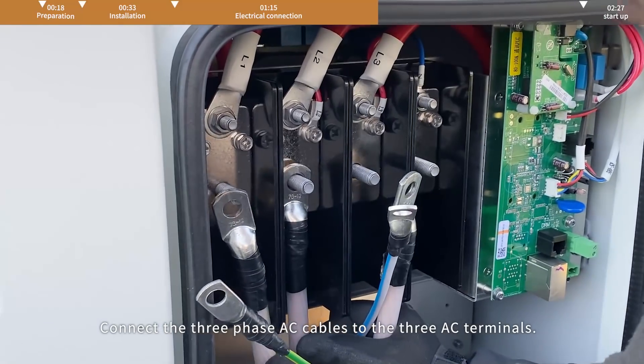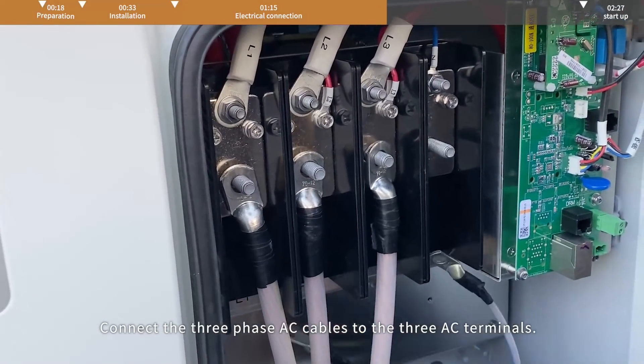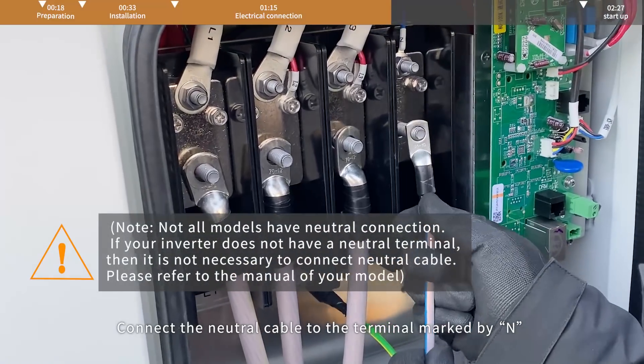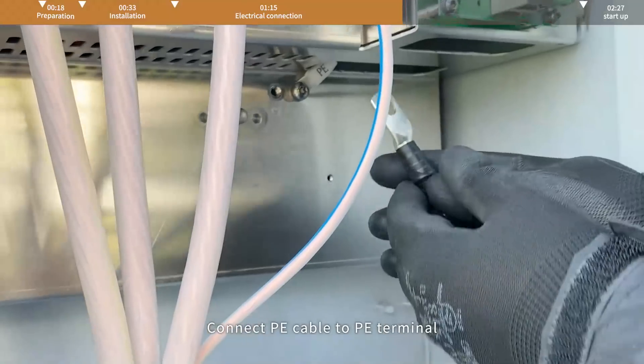Connect three phase AC cables to three AC terminals on the left side. Connect the neutral cable to the terminal marked by N. Connect PE cable to PE terminal.